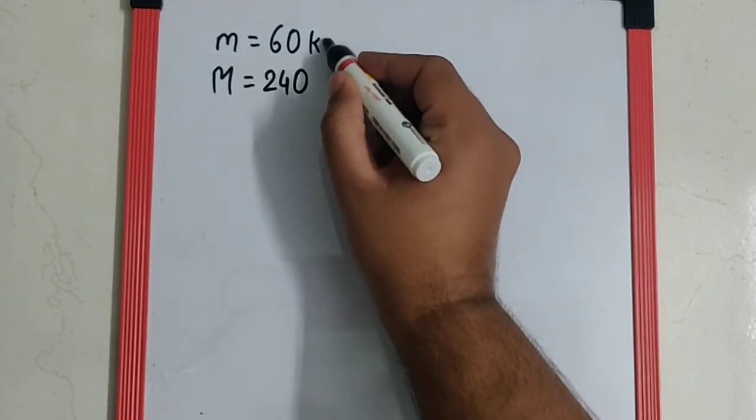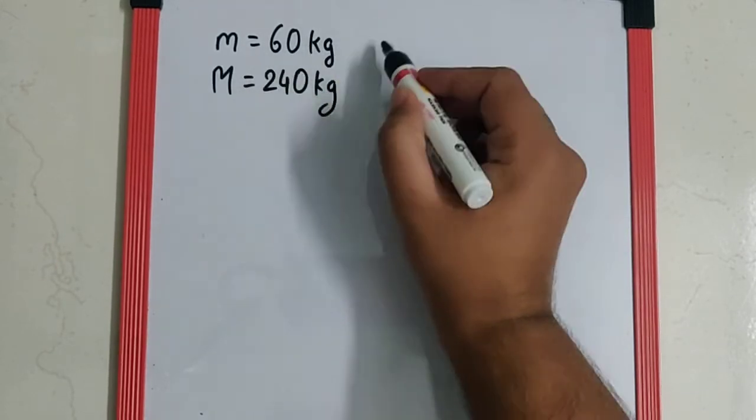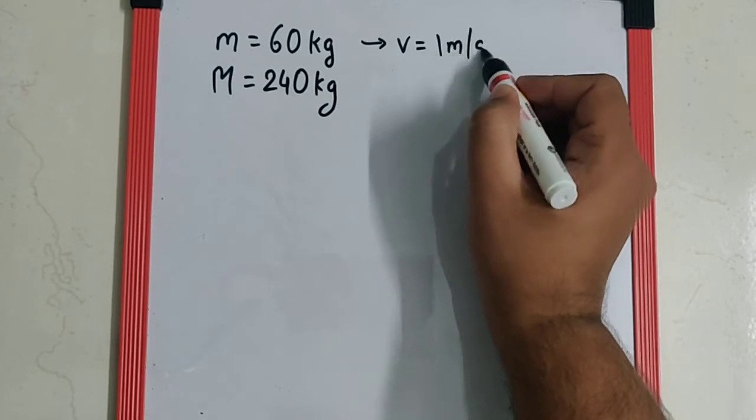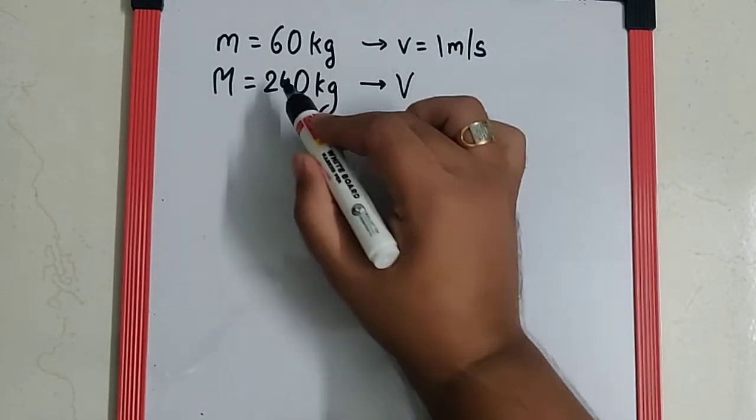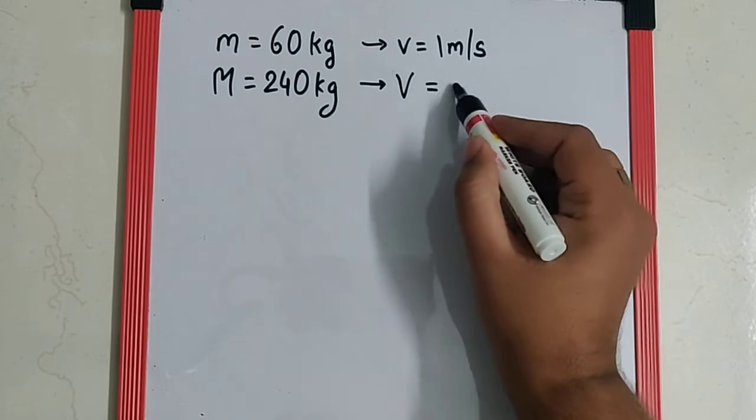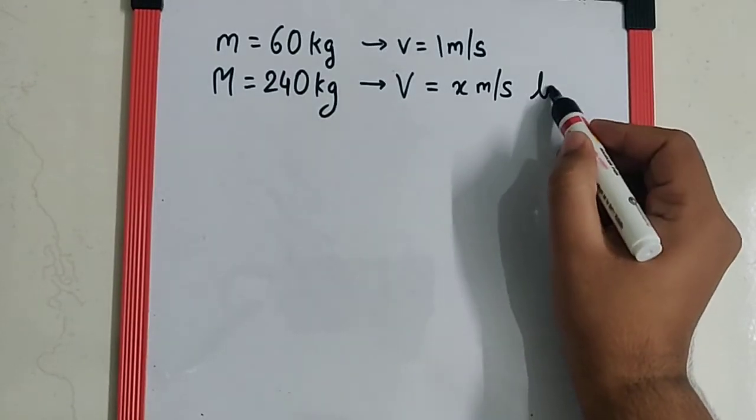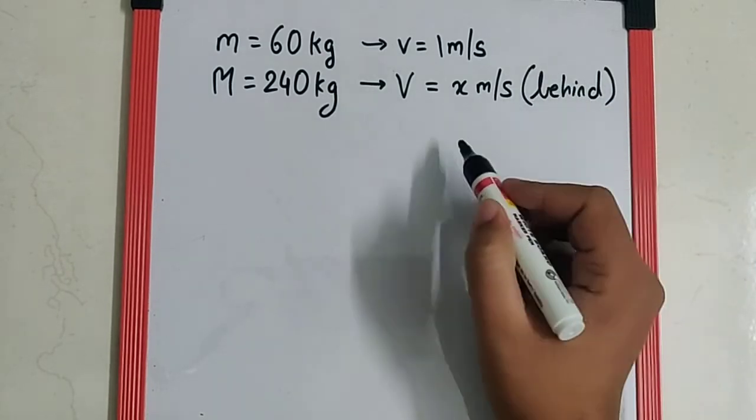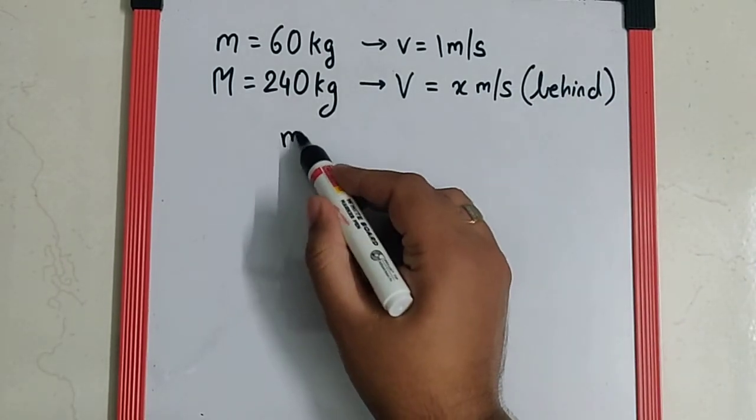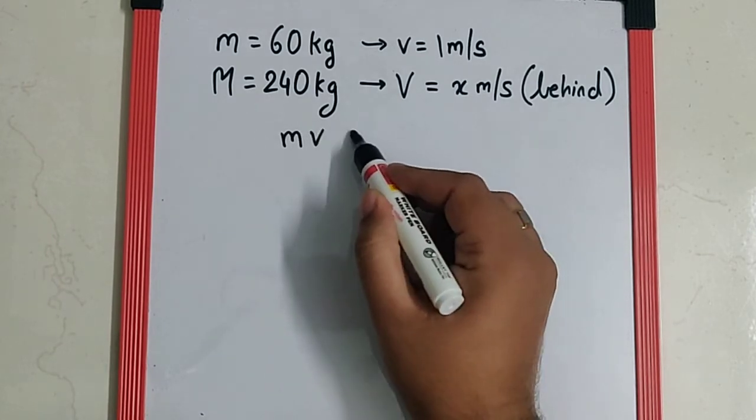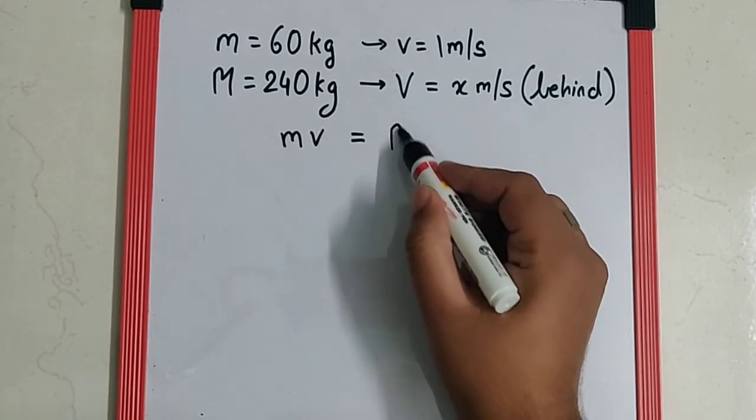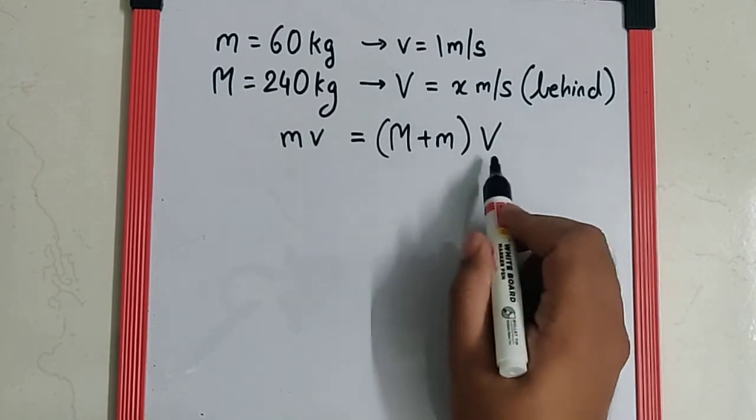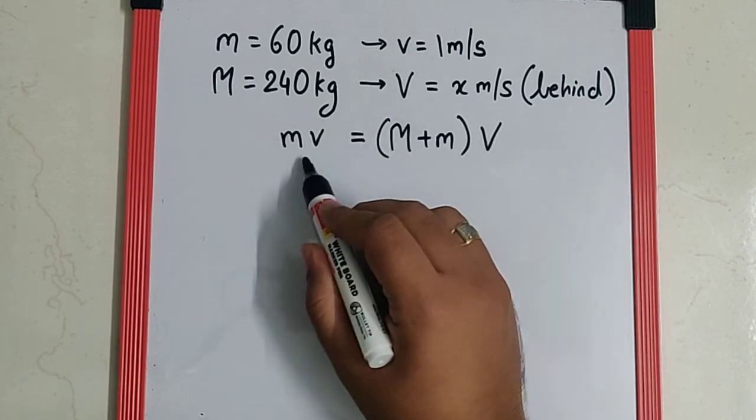So we can say as the man moves ahead with a velocity of 1 meter per second, then the trolley along with the man will move with some velocity x meter per second behind by law of conservation of momentum. So we can say mv is the momentum of the man and capital M plus small m into V is the momentum of the man in the trolley, which will be in the opposite direction to that of the man.